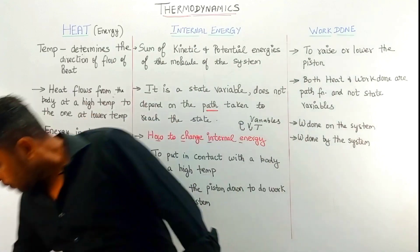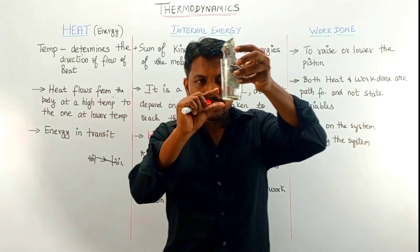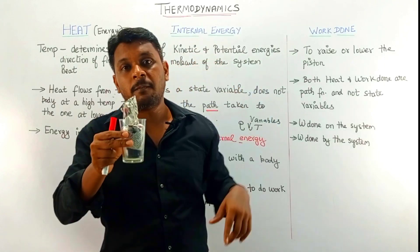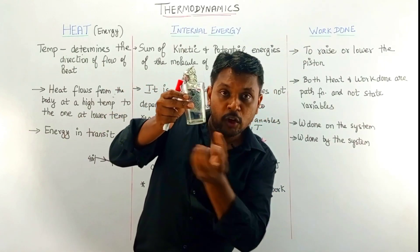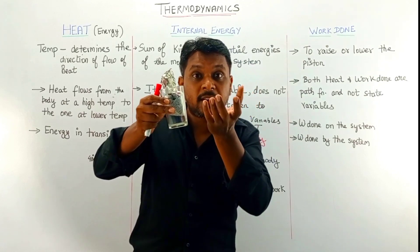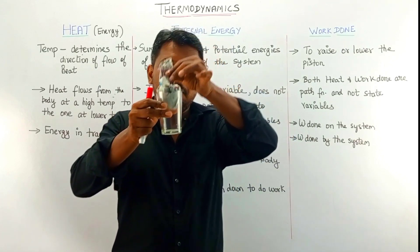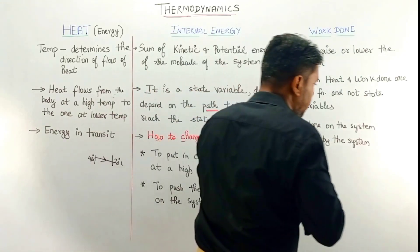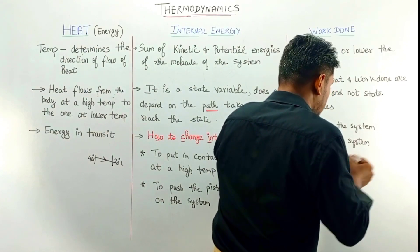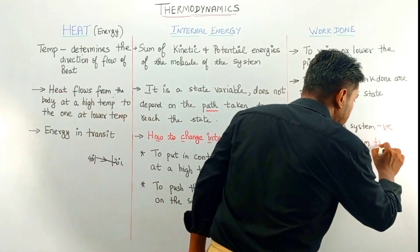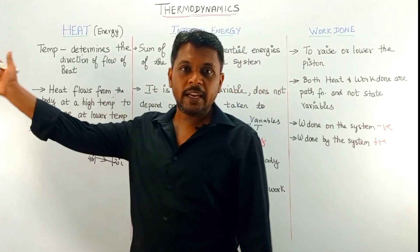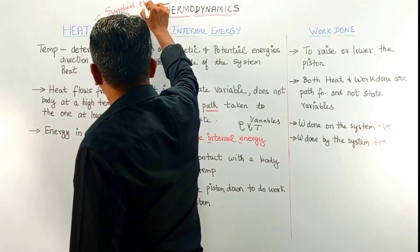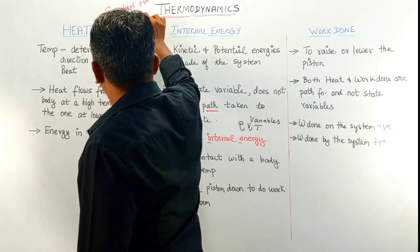Work done on the system occurs when the piston is compressed on the system. Work done by the system occurs when you heat the gas molecules and they expand. Work done on the system is taken as negative; work done by the system is taken as positive. Similarly for heat: when heat is supplied, it is taken as positive; when heat is rejected, it is taken as negative.